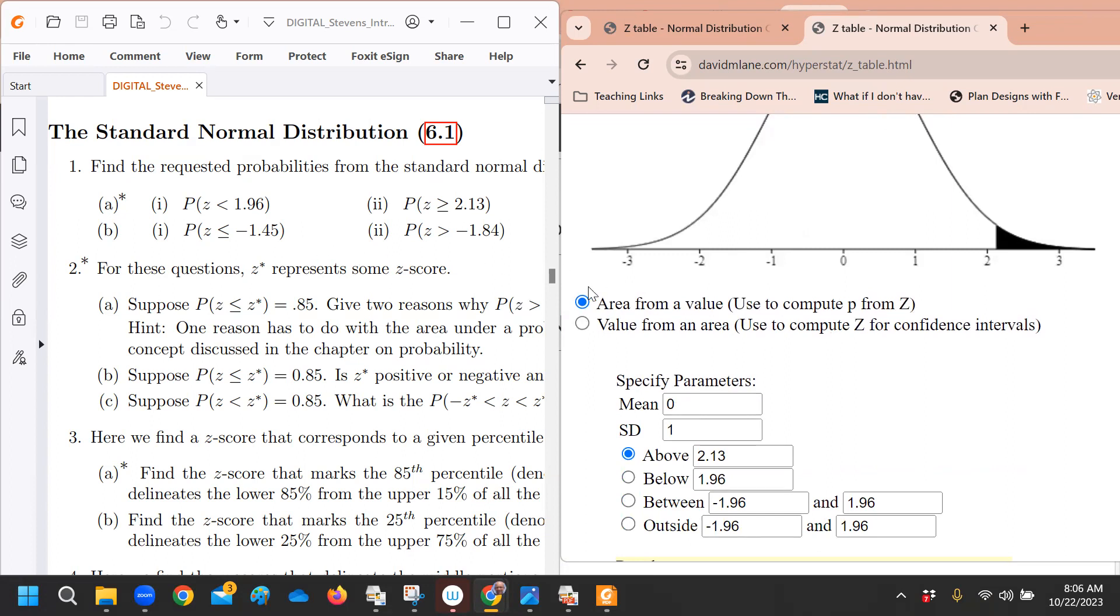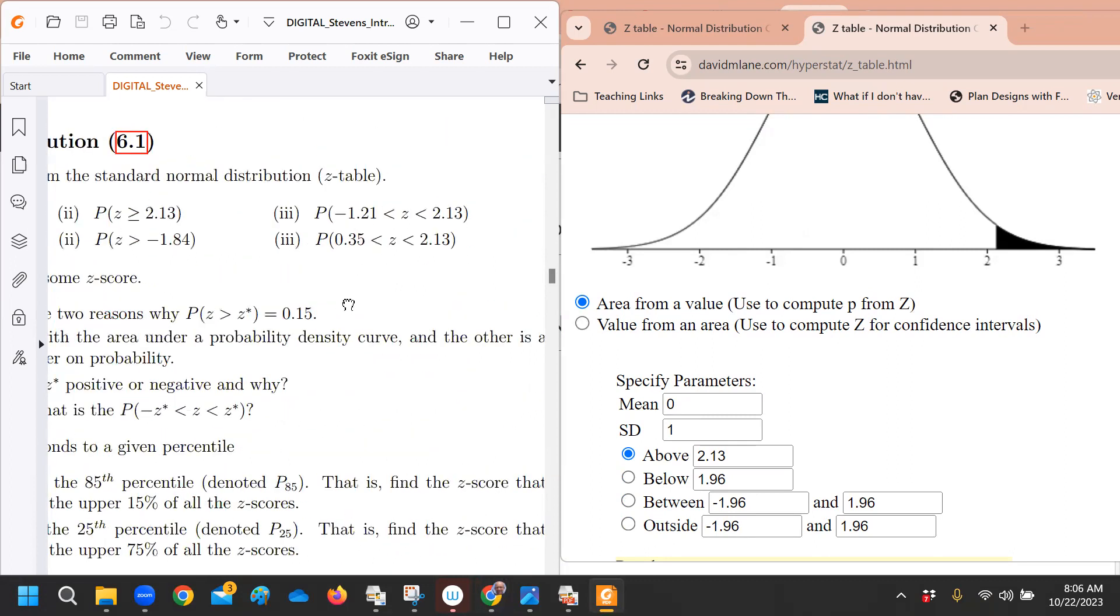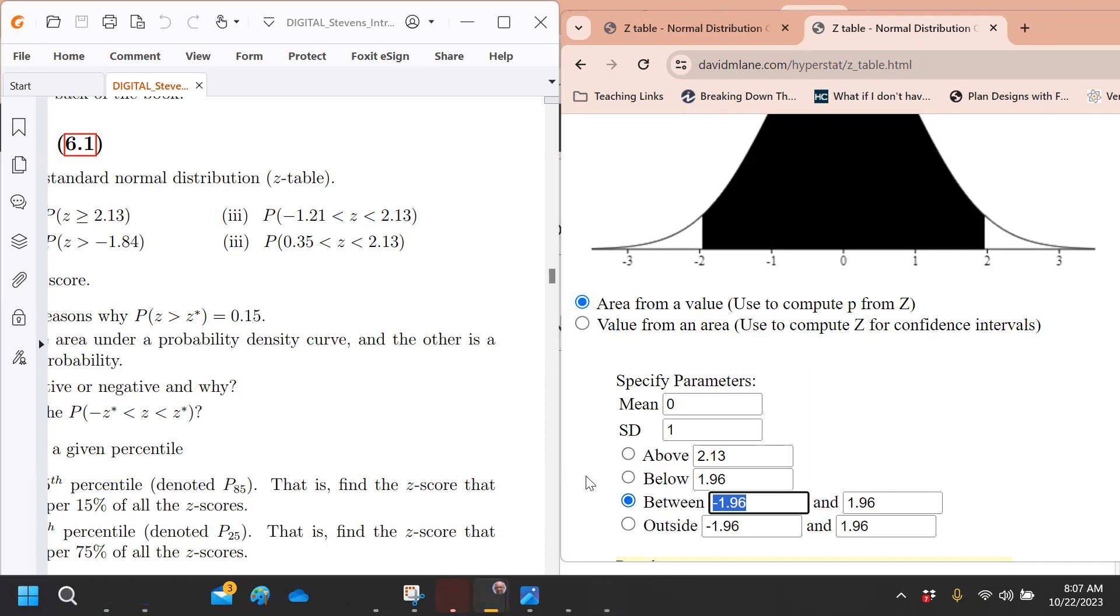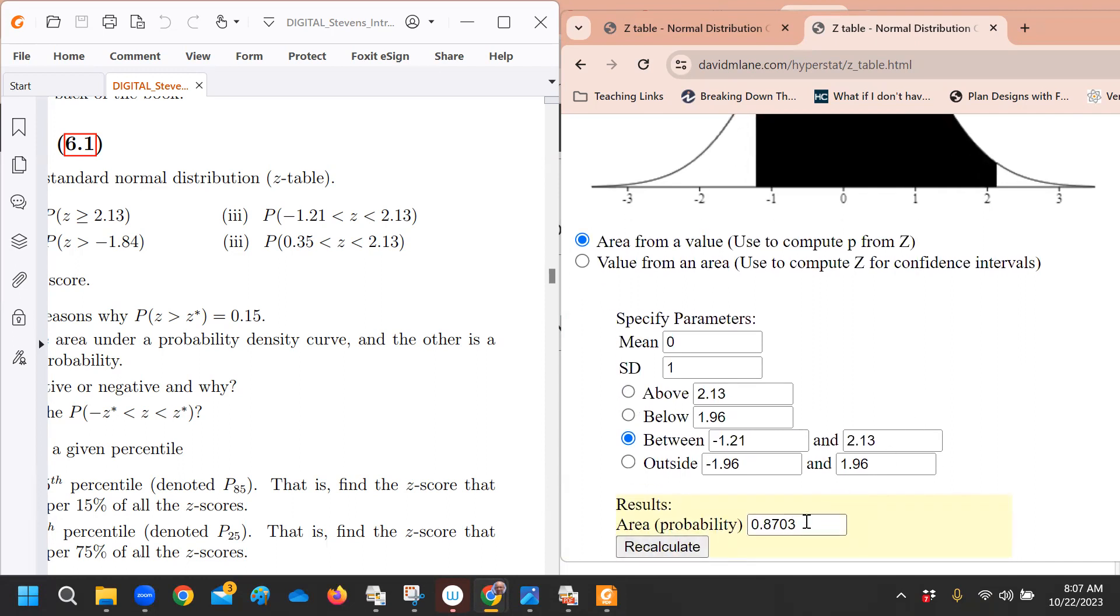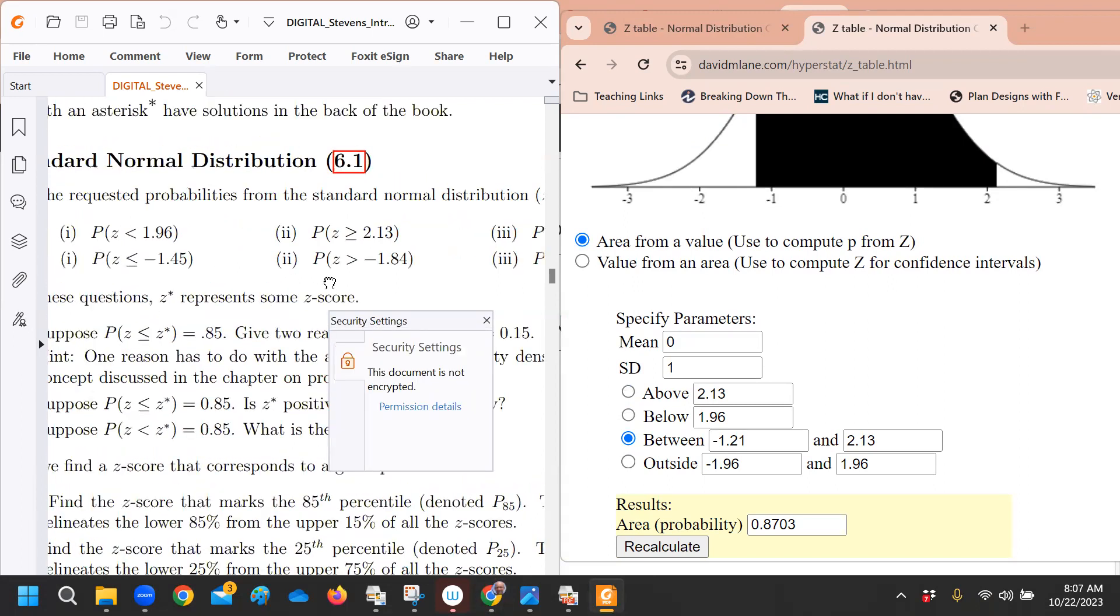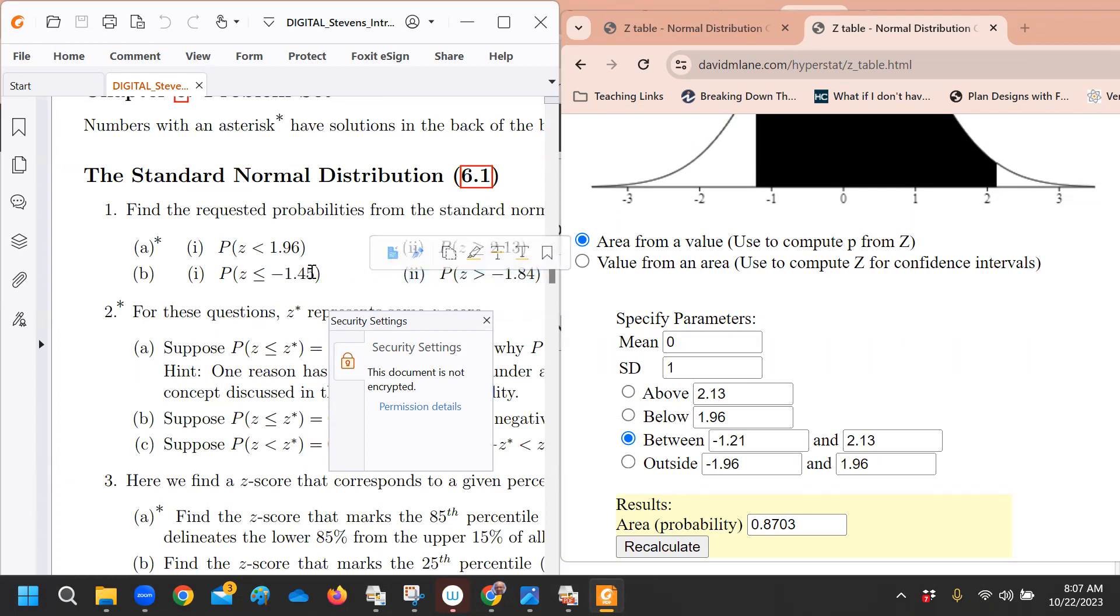So far, I couldn't argue that the table's any easier than that. But when you come to ones like these, to do it with a table, you'd have to look up the z-score of negative 1.21, write down that probability, look up the z-score for 2.13, write down that probability, and subtract them. With the applet, I can say between negative 1.21 and then up to 2.13, and then let it calculate. Look at that. Showed us the area, found the probability. Because this is a start exercise, you can go look the answers up in the back.